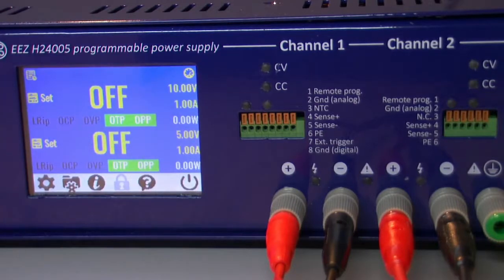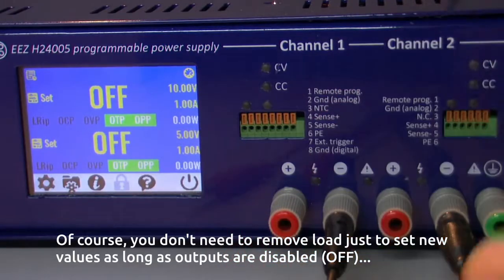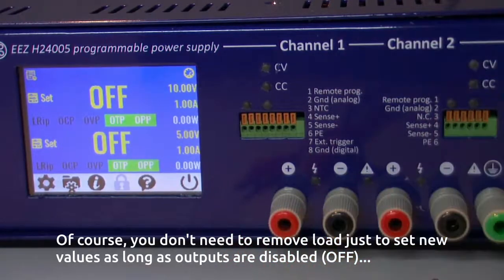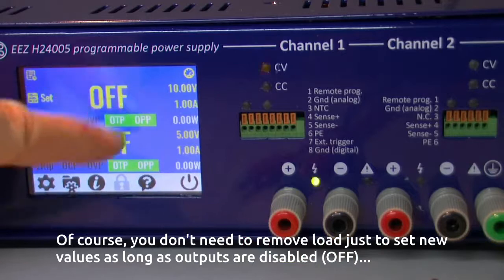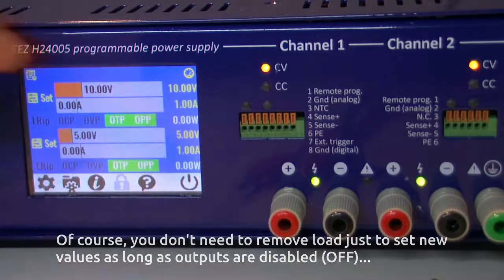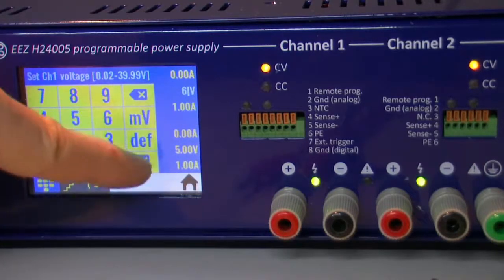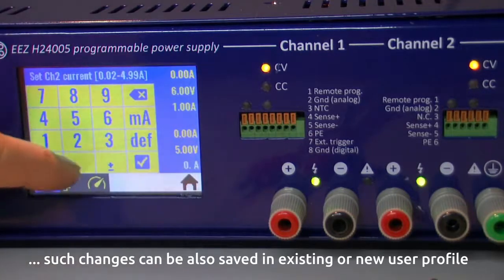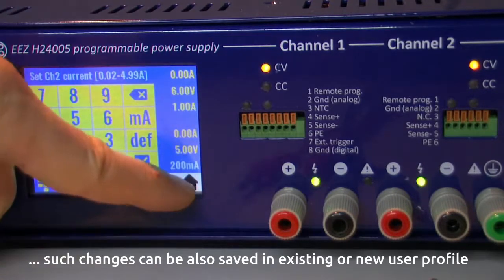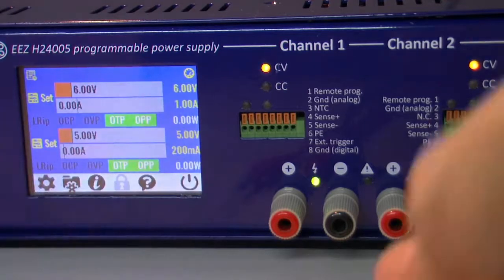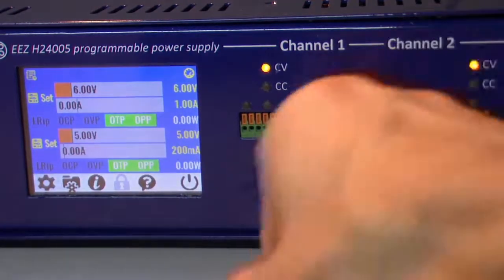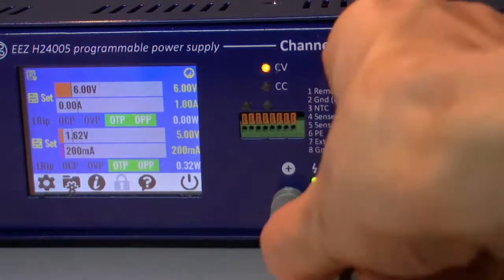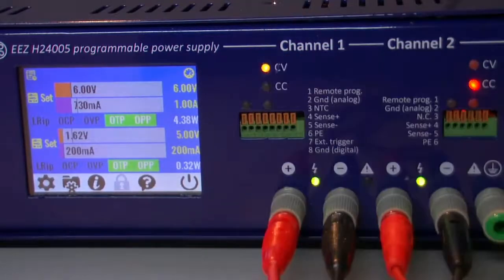And now we have the possibility to remove our load and start everything again. So we have here hypothetical 6V and here it was 200mA. And say again okay now I'm safe and I can put back my loads again.